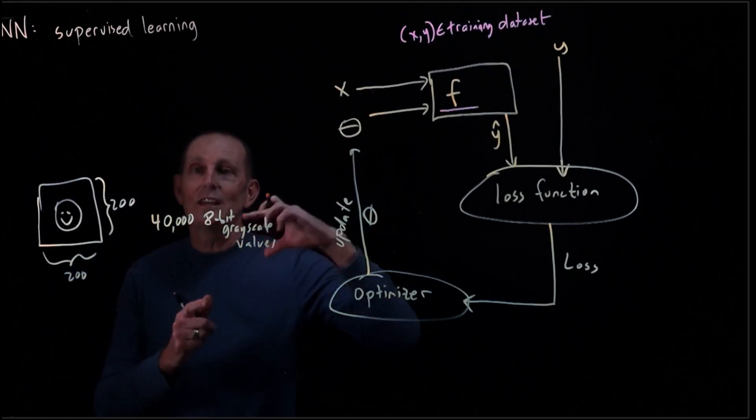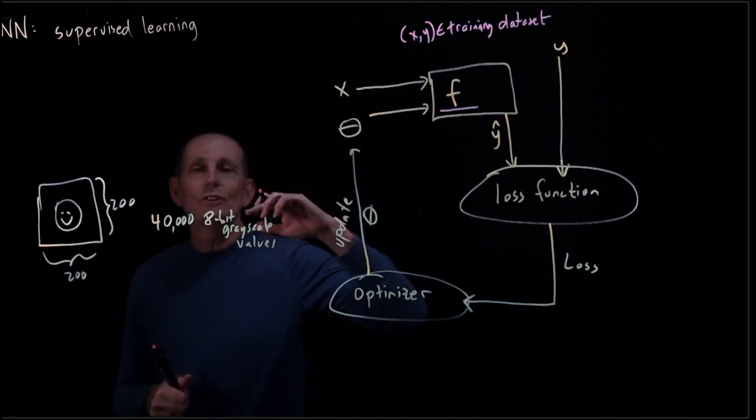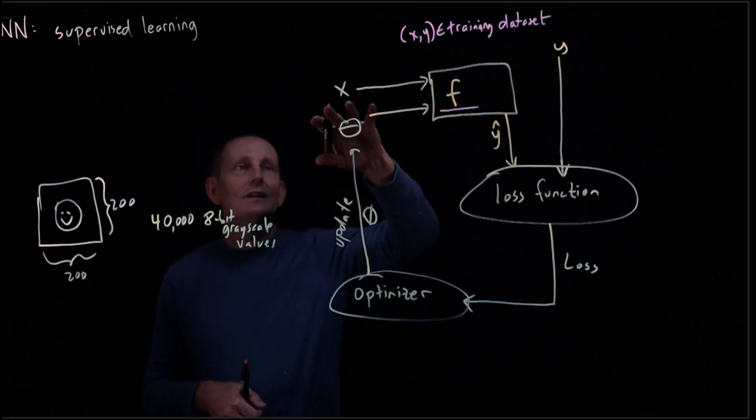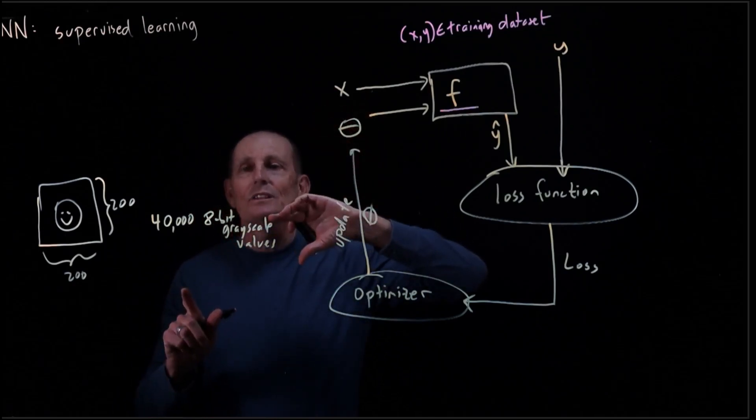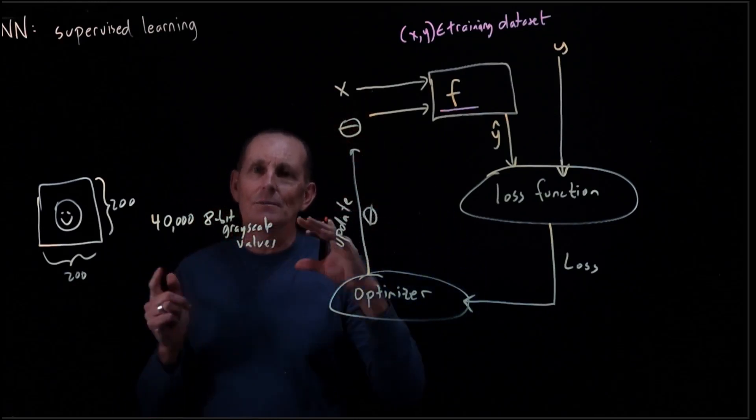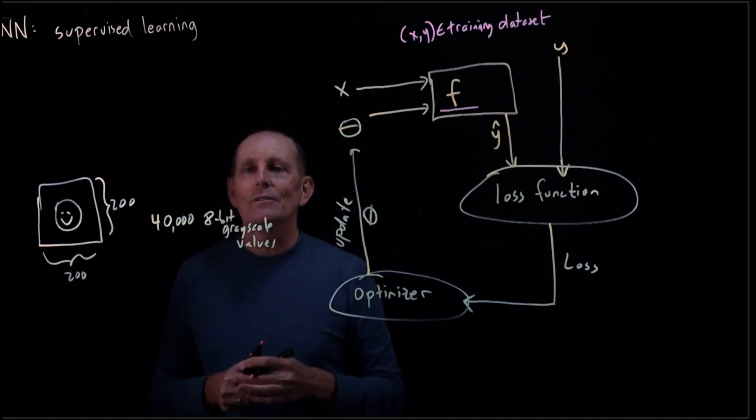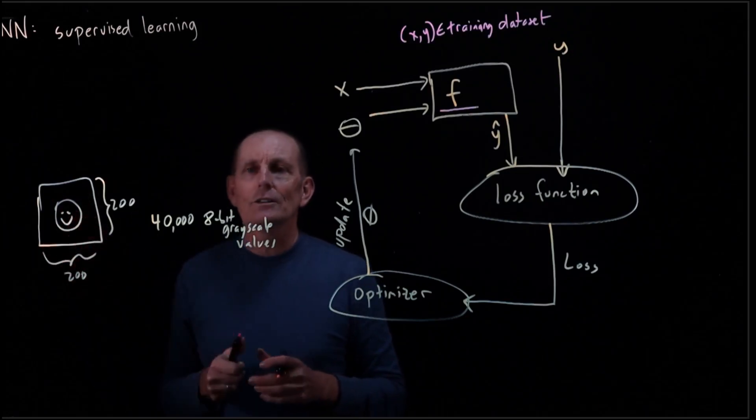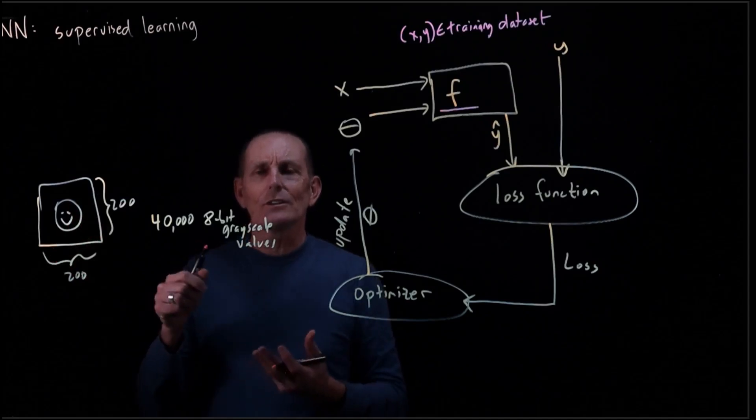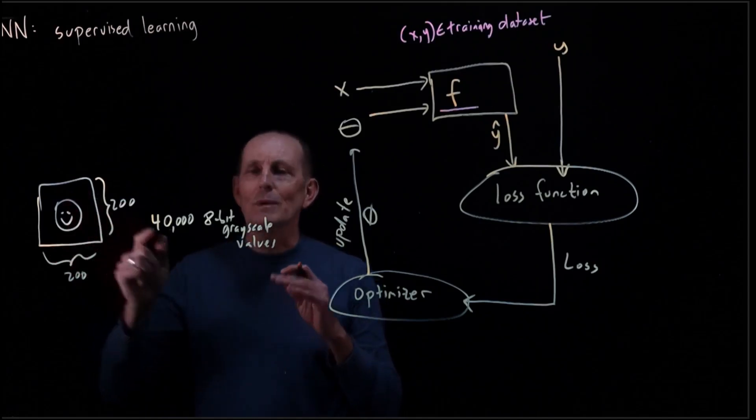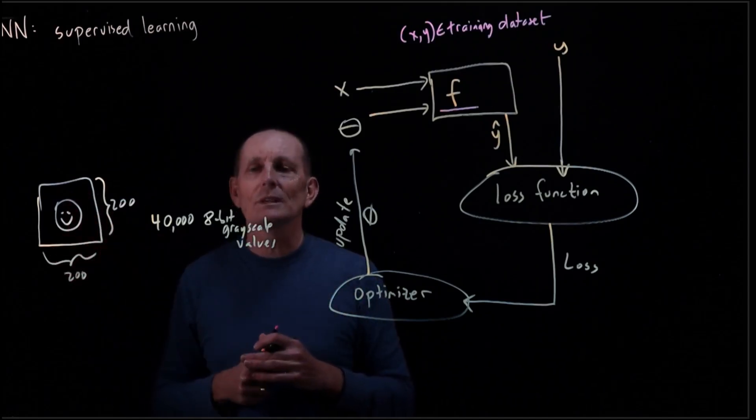Or we could actually represent it as a matrix. So we're going to see that we're going to have the ability to actually have as inputs tensors, which are multidimensional matrices. So in this case, we could have a two-dimensional matrix, 200 by 200, feeding these values. It's a matrix rather than just a vector because we're maintaining the spatial relationship between pixels.